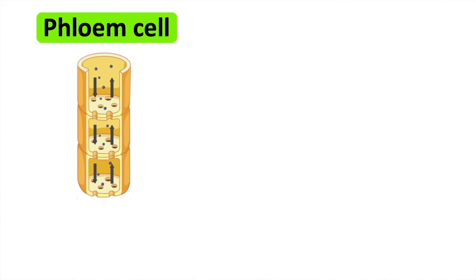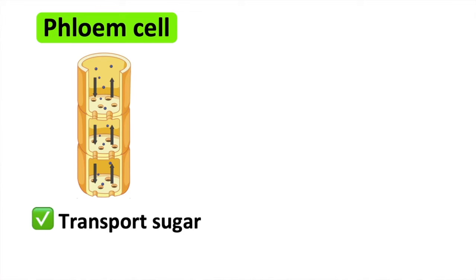These are plant cells that build the transport system for sugars. The cell walls have holes at each end in order to allow sugar to move from one cell to the next cell.